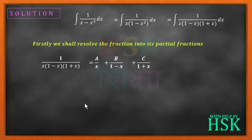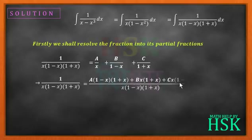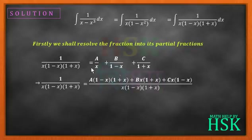All three were linear factors, so I get the partial fraction in this form. Taking the LCM, the right-hand side becomes A into 1 minus x into 1 plus x, plus B times x into 1 plus x, plus C times x into 1 minus x, all over x into 1 minus x into 1 plus x.